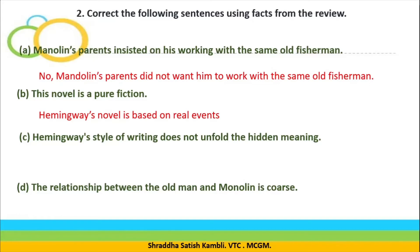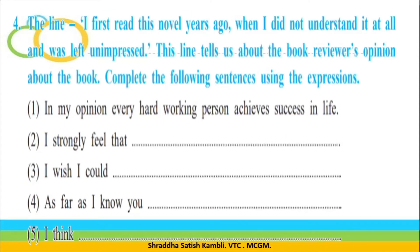Now: Hemingway's style of writing does not unfold the hidden meaning. Find out whether it unfolds hidden meaning or not — does reading the novel a second or third time reveal new meanings? Also: the relationship between the old man and Manolin is coarse. Coarse means not smooth — we use it for objects, like a coarse surface. Think about what kind of relationship the old man actually had with Manolin. These are your assignments.